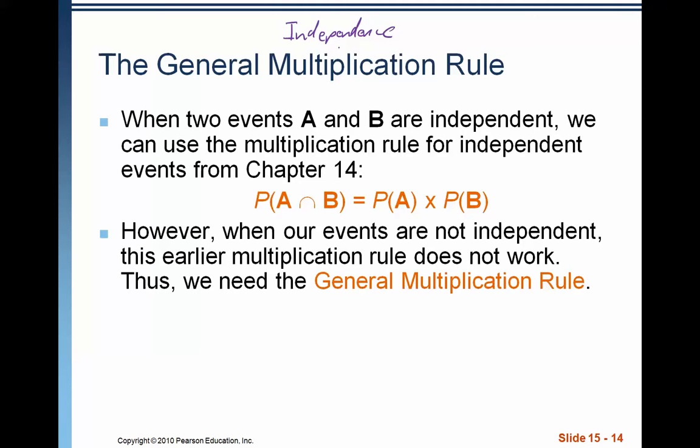However, when events are not independent, this doesn't work anymore. Because when event A happens, that means that it is changing the probability of event B. And when it doesn't happen, that changes the probability of event B. So when things are not independent, there's a relationship between them. And whatever happens with A changes B.